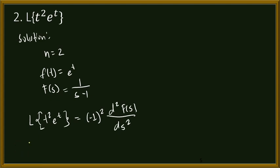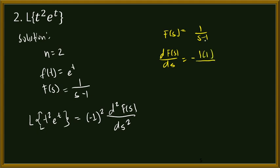I will write this in another color so it is marked clearly. Our F of s is equal to 1 over s minus 1. The first derivative of that equals negative c du over u squared, so negative 1 times 1, all over s minus 1 squared, because the derivative of s is 1. This gives us negative 1 over s minus 1 squared. So this will be our first derivative.